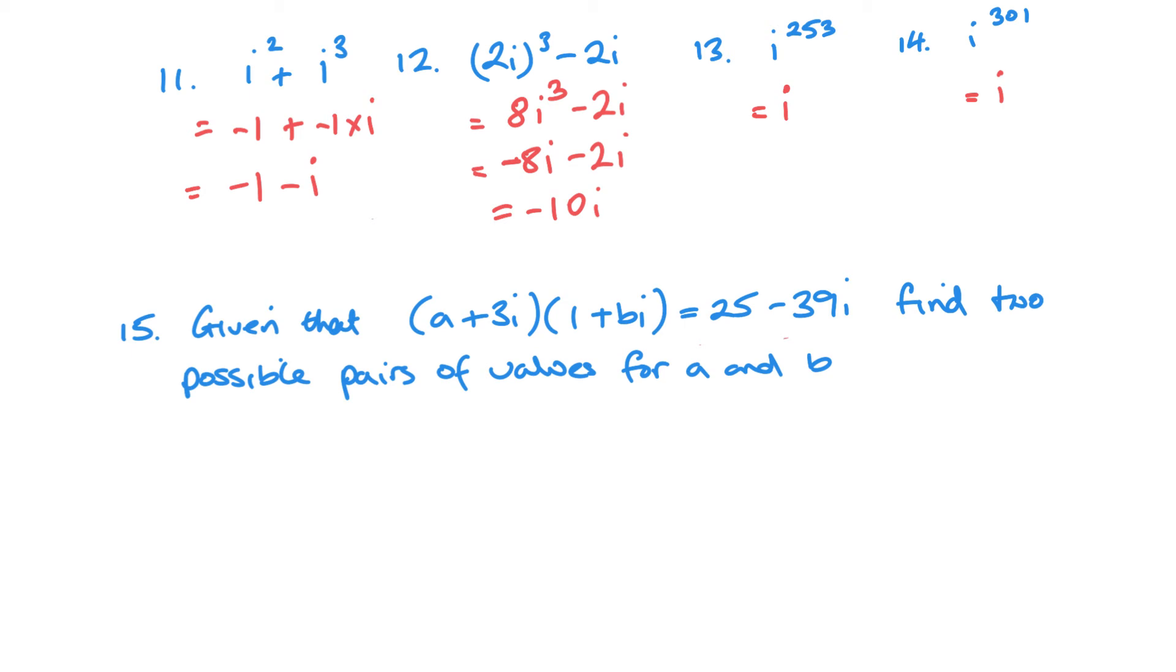And I'll go through the answers to 15. So first you want to expand the brackets. So I'm going to expand these two brackets and then compare. So I'm going to get a plus abi plus 3i plus 3bi squared. And if I simplify, so 3bi squared is going to become a negative 3b.